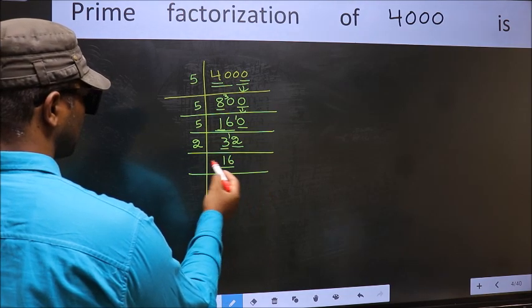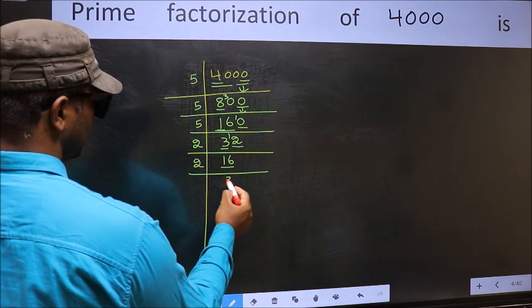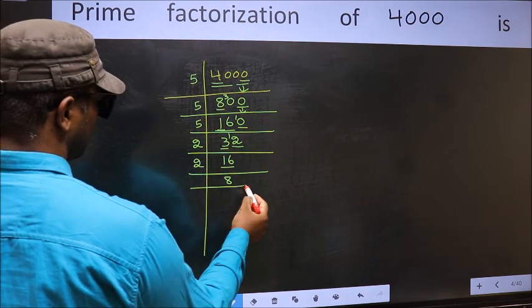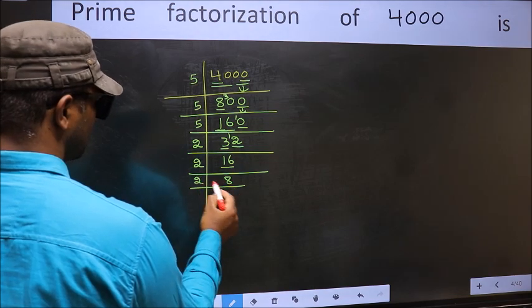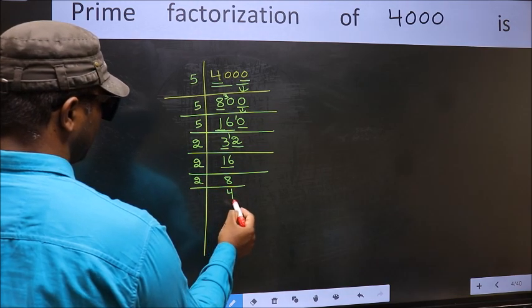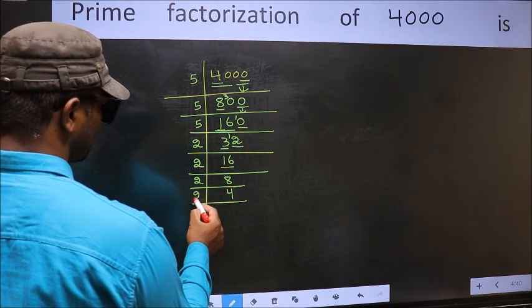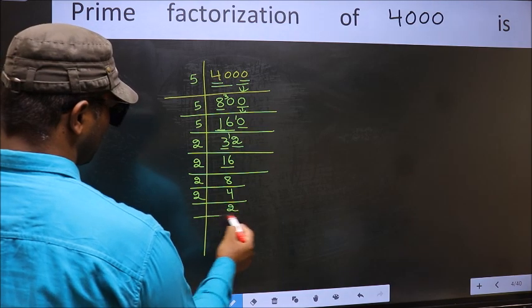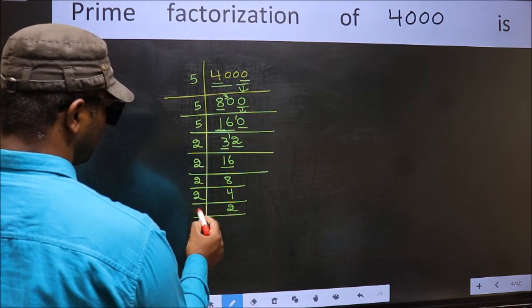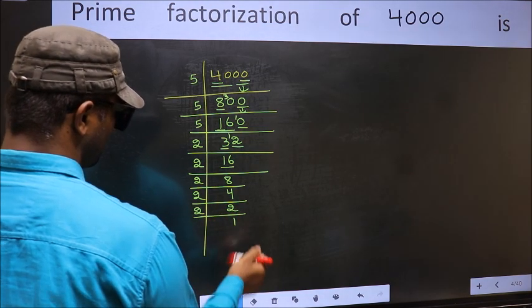Now here we have 16. 16 = 2 × 8. Now we have 8. 8 = 2 × 4. Now 4 = 2 × 2. Now 2 — 2 is a prime number, so 2 × 1 = 2.